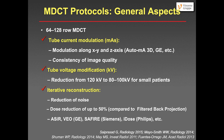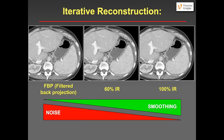Different vendors have different iterative reconstruction algorithms — ASIR or VIBE with GE, SAFIRE with Siemens, or iDose with Philips. With more iterations you reduce noise and get increasing image smoothness. The left image shows standard filtered back projection; with 60% iterative reconstruction you see increasing smoothness and less noise in the liver, spleen, and subcutaneous fat; and with 100% iterative reconstruction there is virtually no noise, but the image looks quite synthetic. You must find a good compromise between noise and acceptable image appearance for your clinical practice.